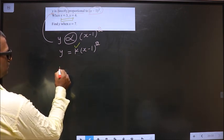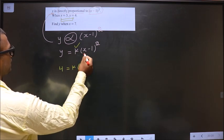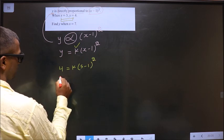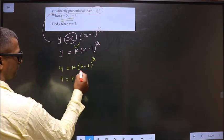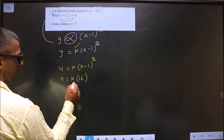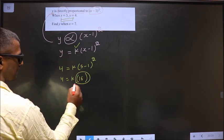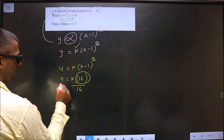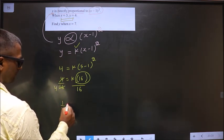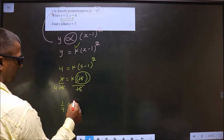So y is 4, x is 5. So 4 equal to k times 5 minus 1 is 4. 4 square is 16. So to get k, now I should get rid of this 16. For that, divide by 16 on both sides. So I get 1 by 4 equal to k.